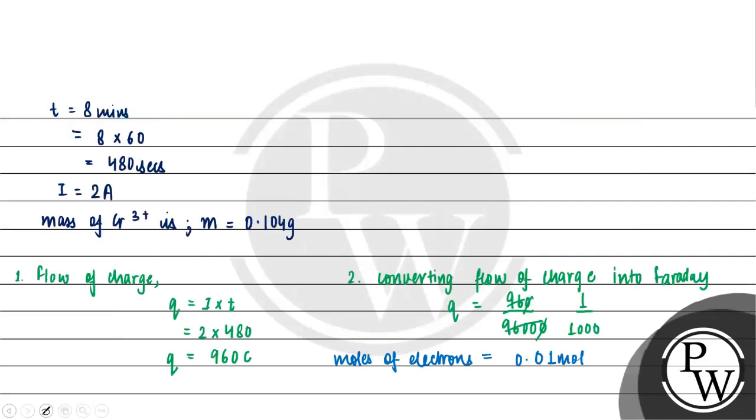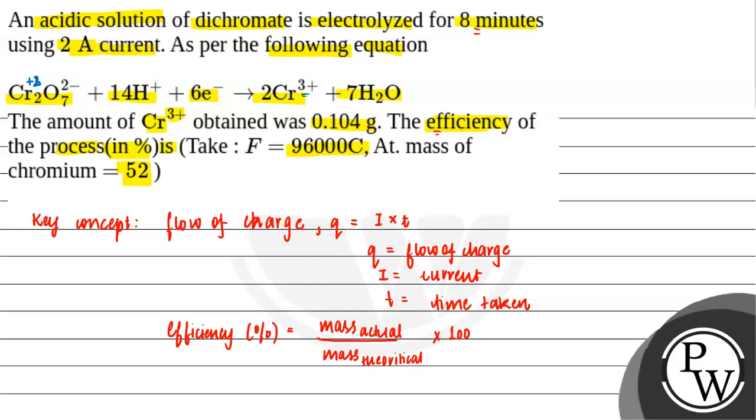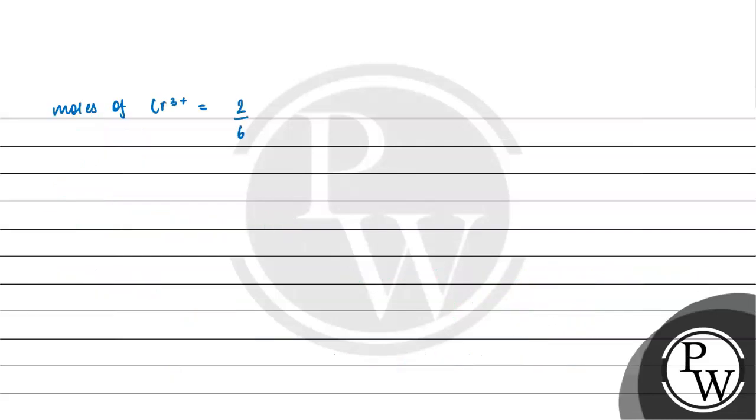Moving on to the question, if we talk about moles of Cr^3+ ions: we have been given +2 state going to +3. That would be 2/6 × 0.01 moles. When we calculate this, moles of Cr^3+ ions = 1/3 × 0.01 = 0.00333 moles.